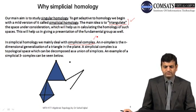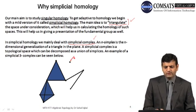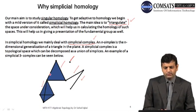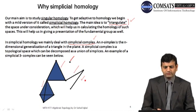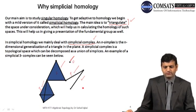An n-simplex is basically the n-dimensional generalization of a triangle in the plane. A simplicial complex is a topological space which can be decomposed as a union of simplices. As an example of a simplicial 3-complex, we can see a structure combining a point (zero simplex), line segments (one simplices), a triangle (two simplex), and a tetrahedron (three simplex) put together to form a simplicial complex.